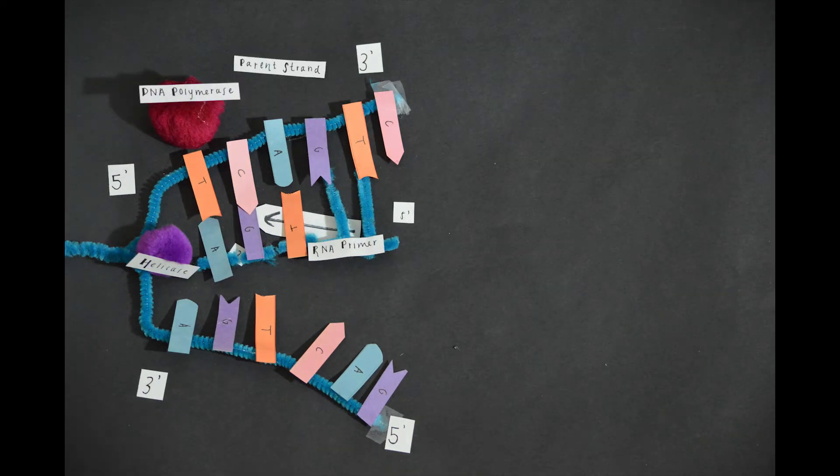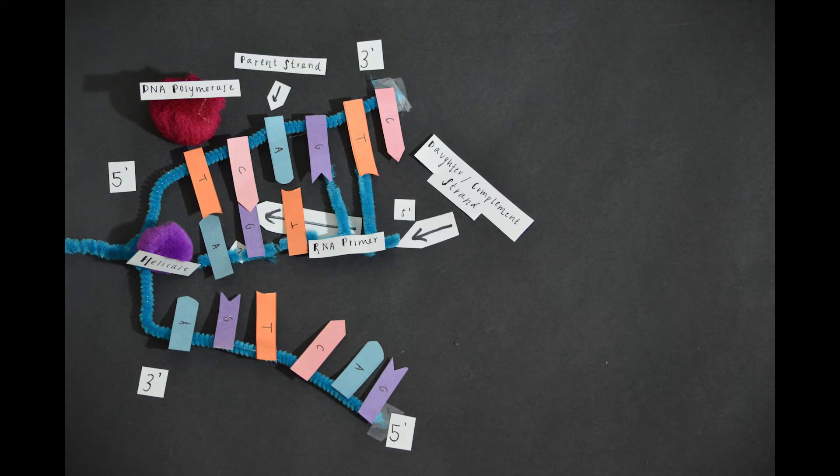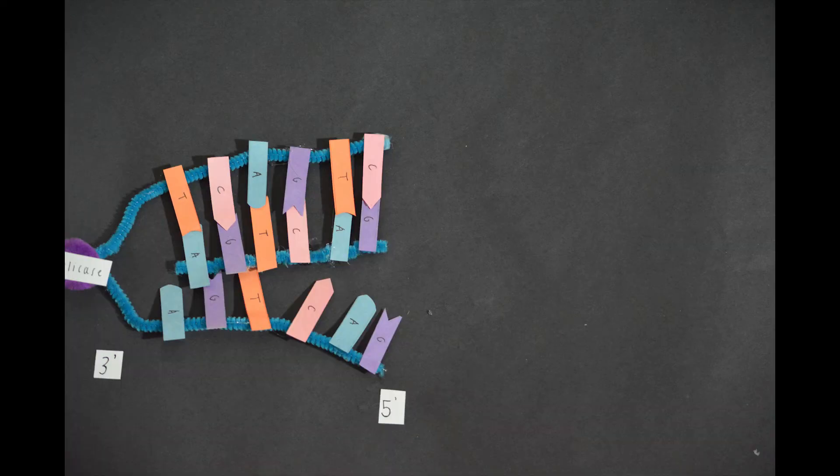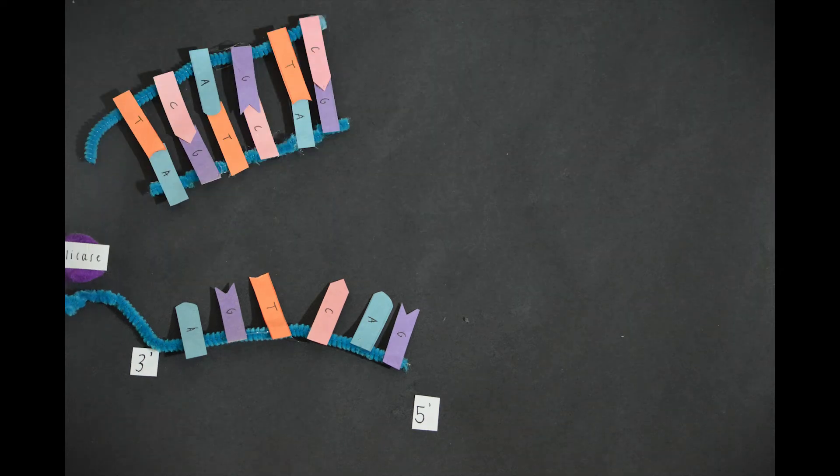The DNA polymerase moves along the DNA parent strand in the 3' to 5' direction, and as it goes it adds nucleotides to the complementary strand and bonds together the nucleotides from the parent strand and the newly formed complementary strand, as initiated by the RNA primer.